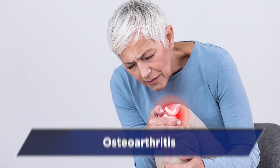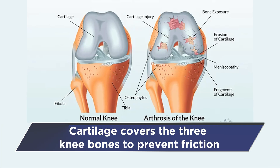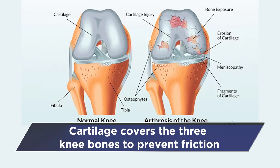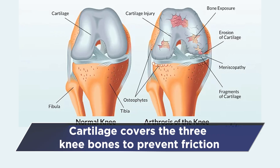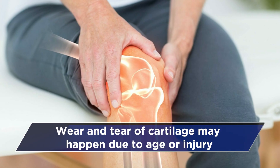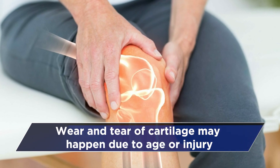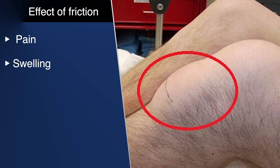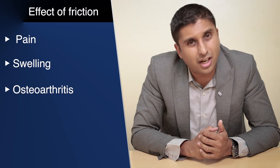Number one: osteoarthritis. In simple words, your knee is getting old. Your knee is a machine — it is a joint where three bones meet, and those bones are covered with cartilage, which acts like a polish so that friction is minimized. This cartilage can get rubbed off over time because of age or injury, causing friction in the joint. This friction can cause pain and swelling, and this is called osteoarthritis.